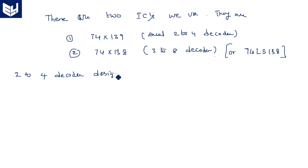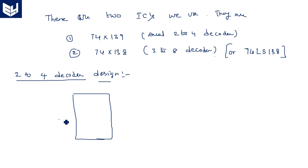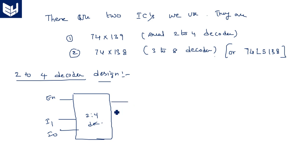Now let us see how the 2-to-4 decoder is designed. It has two inputs I1 and I0, one enable pin, and four output lines Y3, Y2, Y1, Y0.